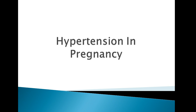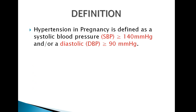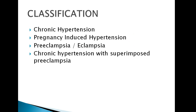So, what is basically hypertension in pregnancy? There are a few things we are going to discuss here — definitions, up to preeclampsia and eclampsia. Hypertension in pregnancy is defined as a systolic blood pressure equal to or more than 140 mmHg and a diastolic blood pressure equal to or more than 90 mmHg. This is the same definition as for a non-pregnant woman.